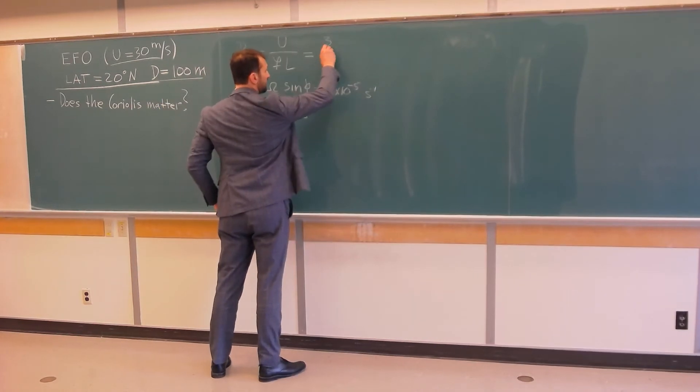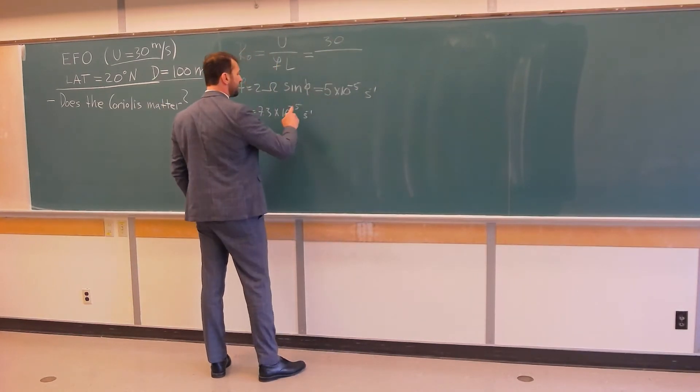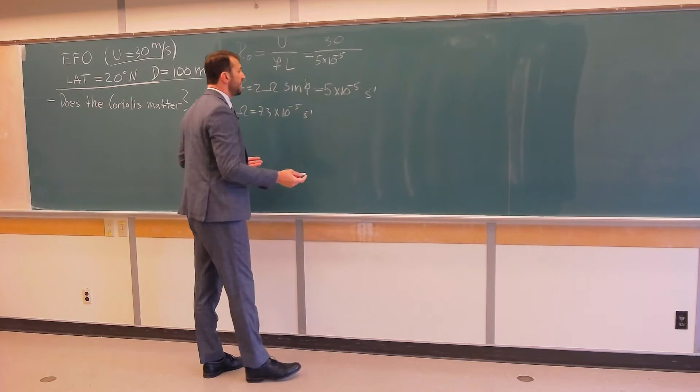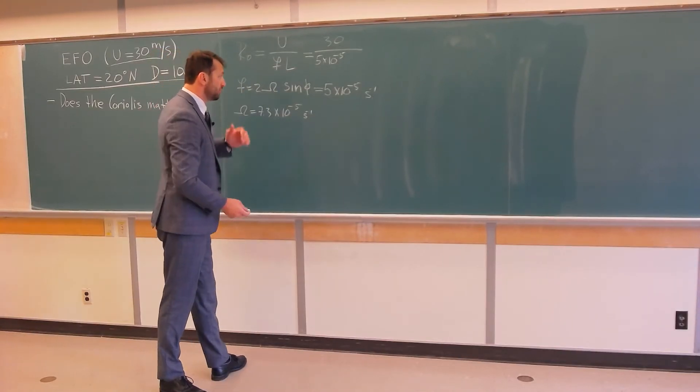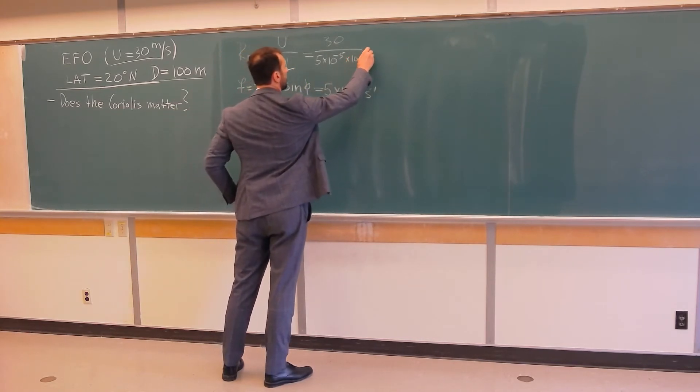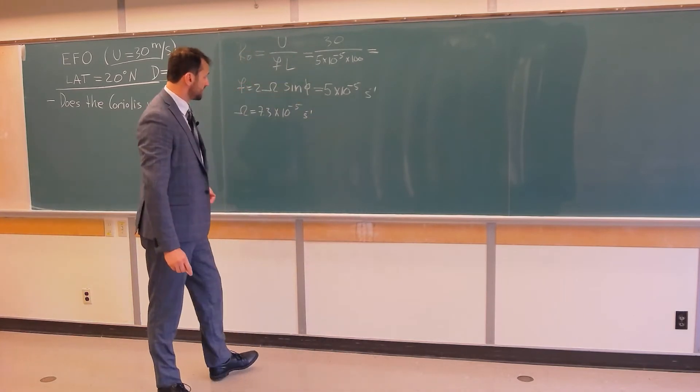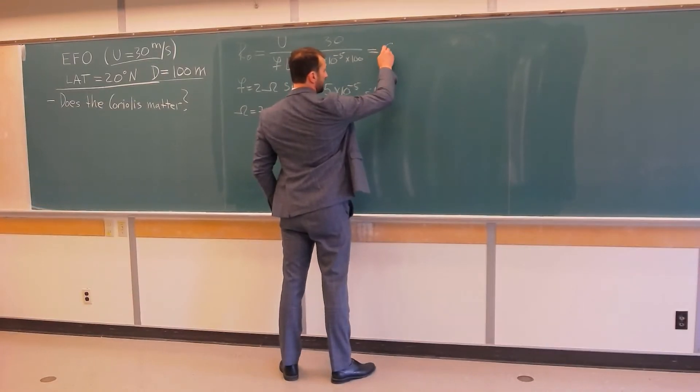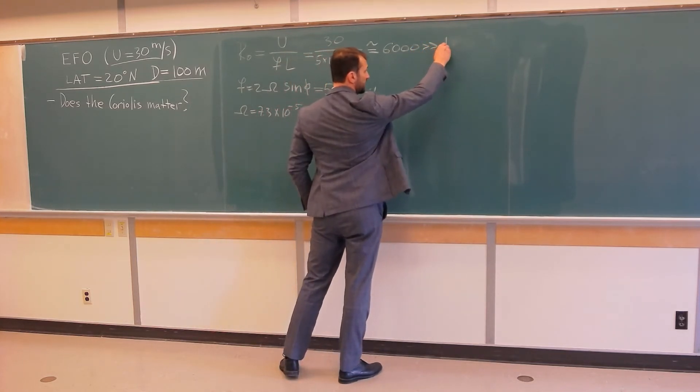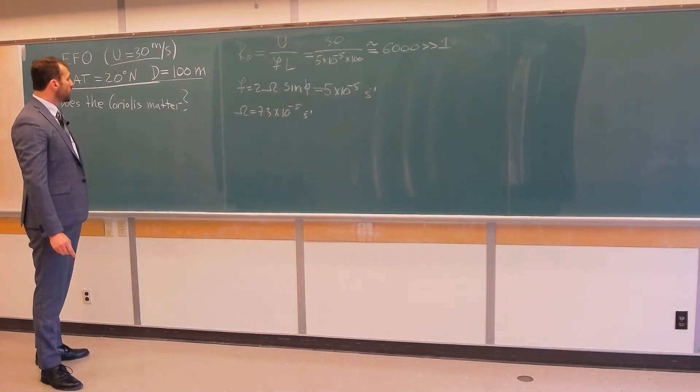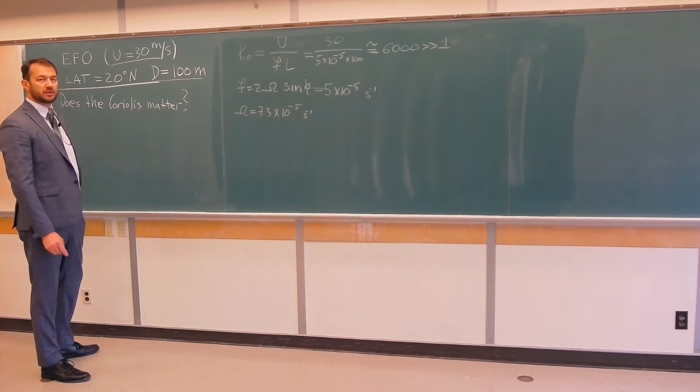So, this is equal, U is 30 meters per second, F is 5 times 10 to the power negative 5, second minus 1, everything is in SI units, so I don't put units over there, and times characteristic length is 100 meters. Now, I believe, if you calculate this over here, you will get a value that is approximately 6,000, and 6,000, in my books, is much larger than 1, which means that the Coriolis force is completely not important in this tornado.